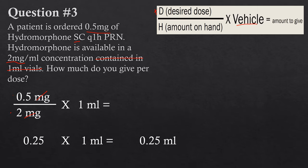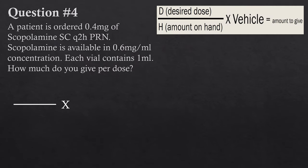Question four: a patient has ordered 0.4 milligrams of scopolamine subQ, Q2H PRN. Scopolamine is available in a 0.6 milligram per mL concentration; each vial contains one milliliter. How much do you give per dose? Pause and try it yourself. Starting with the desired dose — this will sound repetitive, but that's the point. The more times you repeat it, the better chance you have of actually learning it. The desired dose is 0.4 milligrams.